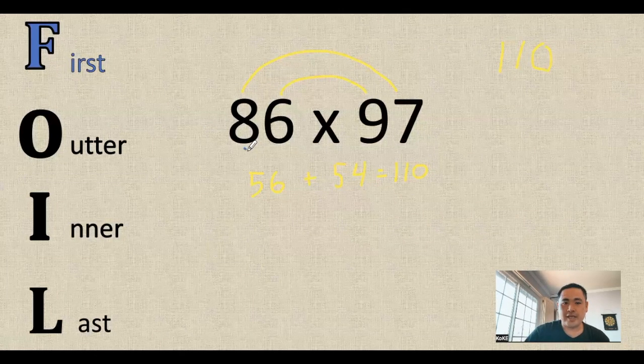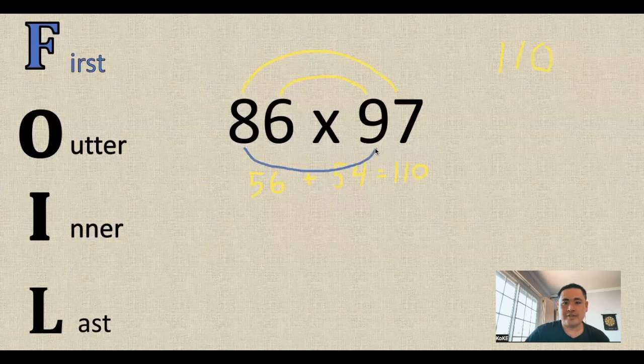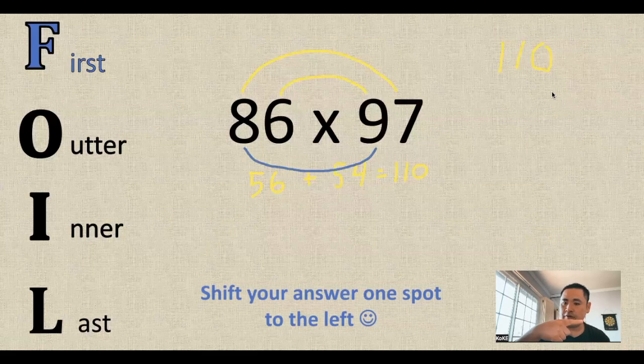And now for the first, the 8 and the 9 is going to give us 72. Now instead of writing it below the 0, we're going to shift it right over to the left. So we're going to write that 72 right here.